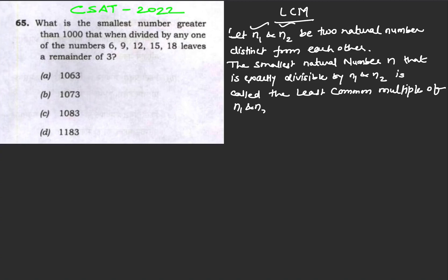by any of the numbers 6, 9, 12, 15, 18 leaves a remainder of 3? This question comes under the concept of LCM, which says that let n₁ and n₂ be two natural numbers distinct